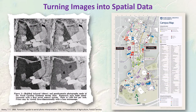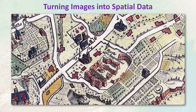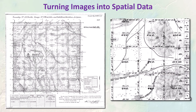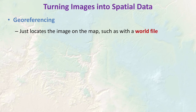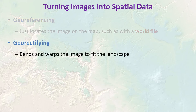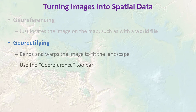Next topic: so far we've discussed two ways to create spatial data — using the sketch tool, and converting a table of coordinates to points. Now we'll look at how to take an image and turn it into real spatial data. You might scan an image from a textbook, take a photograph, or download an image file showing a map. There are three general ways to do this. The simplest is geo-referencing, which just locates the image on the map and places it in the right spot, like using a world file. A more complex method is geo-rectifying, which can actually bend and warp the image to fit the landscape using the geo-reference toolbar — that's what we'll do in the labs.